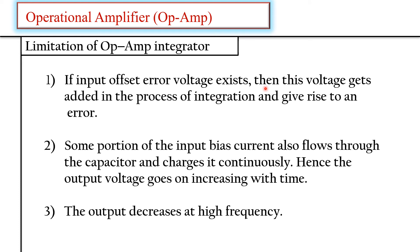Limitations of the op-amp integrator: if an input offset error voltage exists, it gets added during integration, causing an error at the output. Some of the input bias current also flows through the capacitor, charging it continuously so the output voltage increases with time. If the integration time is large enough, the charge on the capacitor leaks through the dielectric and the capacitor voltage will not be held constant. As a result, the output decreases at higher frequencies.